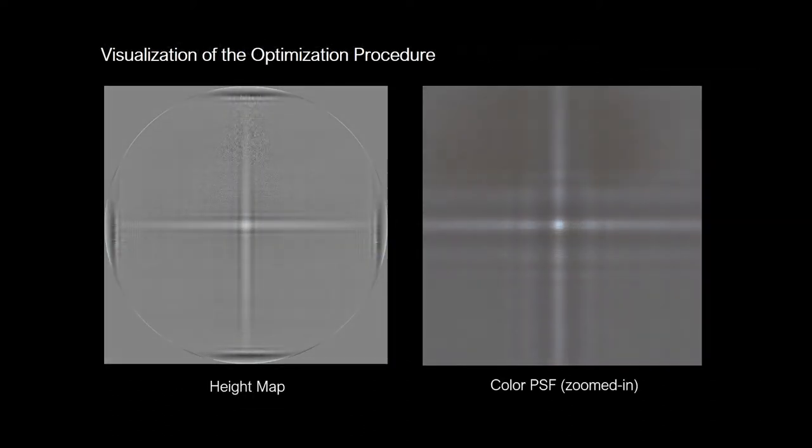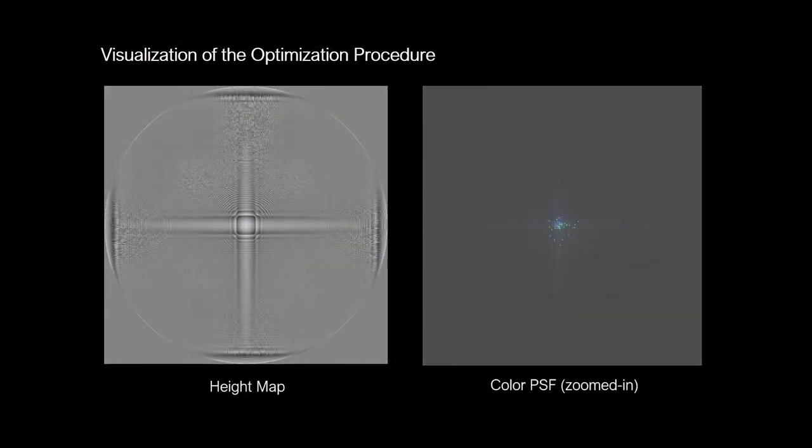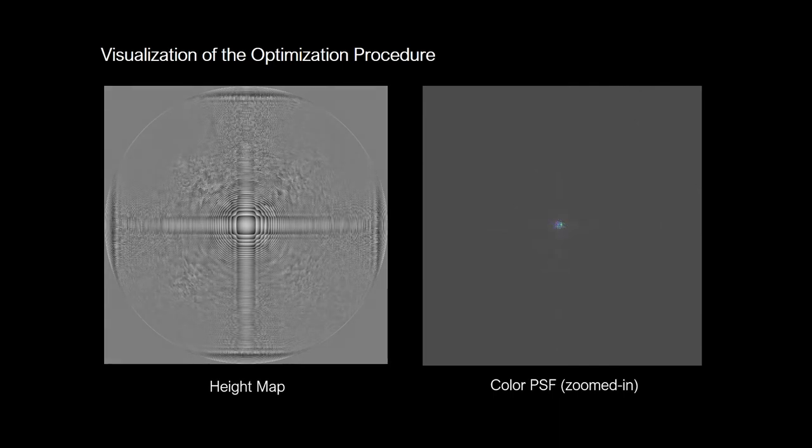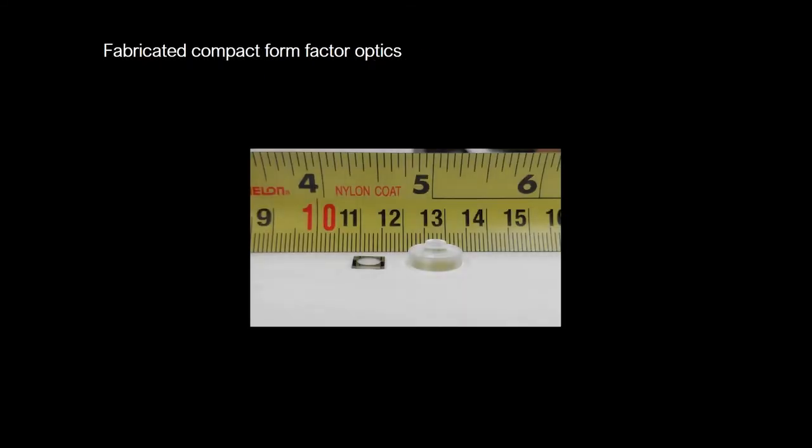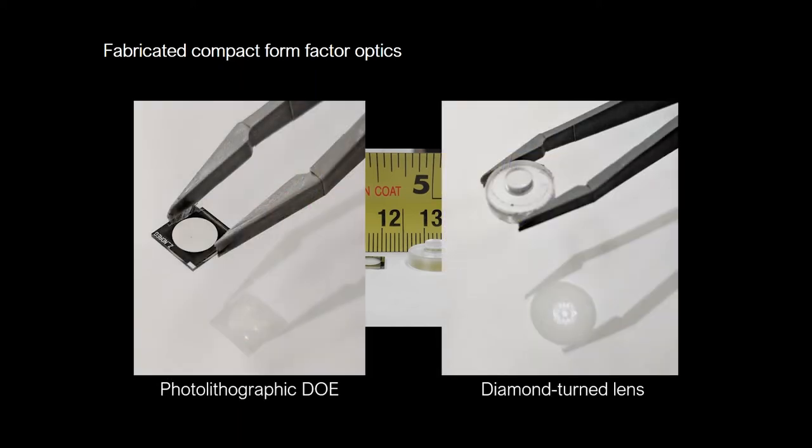Here we see the optical element height map and simulated PSF converging to a solution over stochastic gradient iterations. Using state-of-the-art photolithography and diamond-turning manufacturing techniques, we obtain compact form factor lenses that match the performance in simulation.